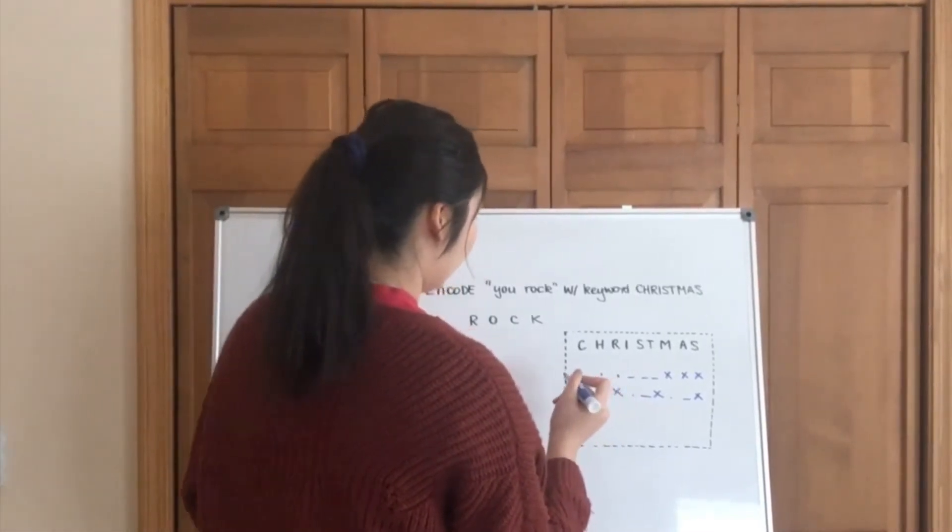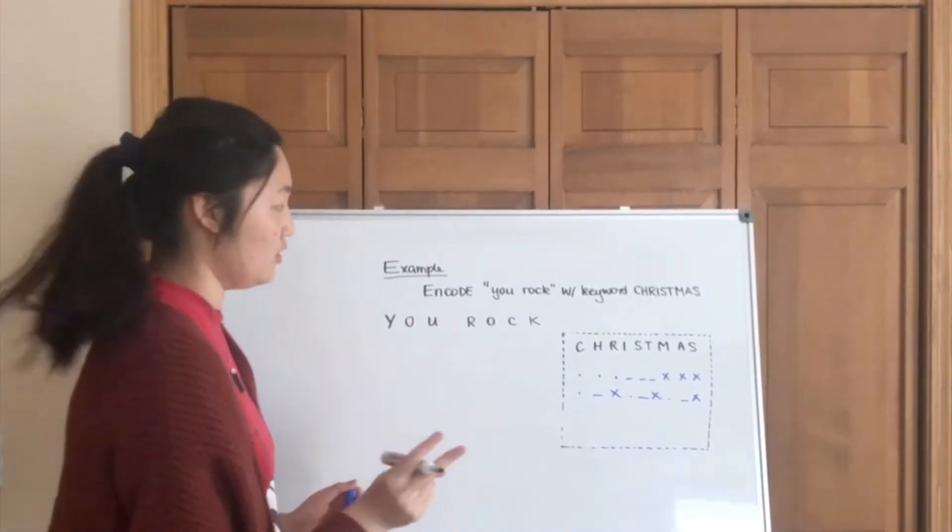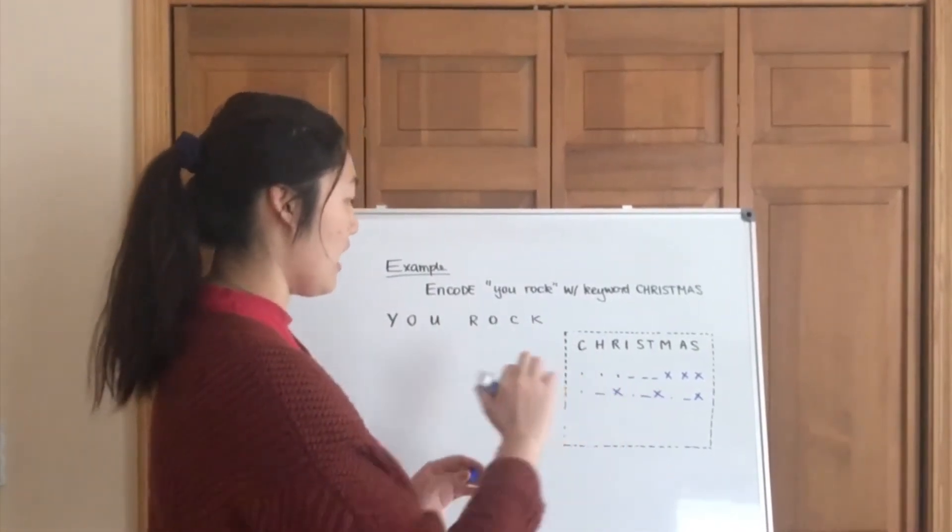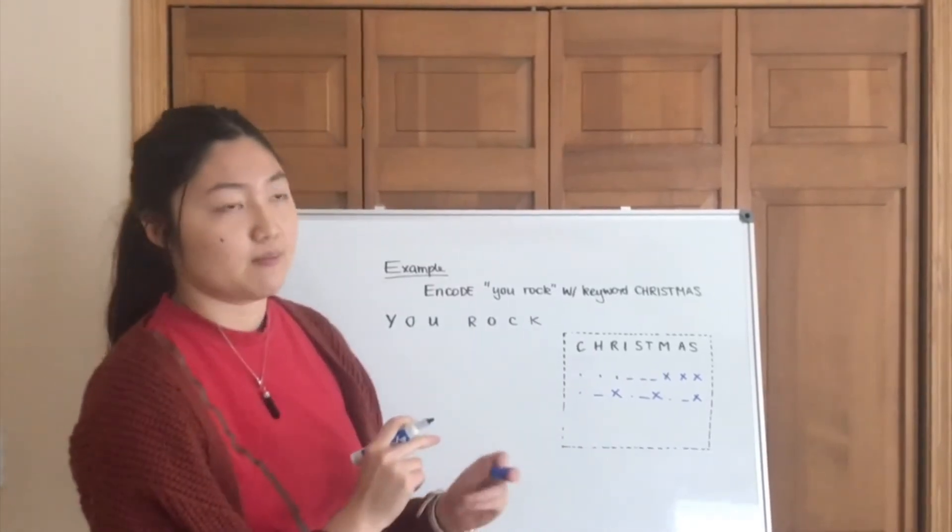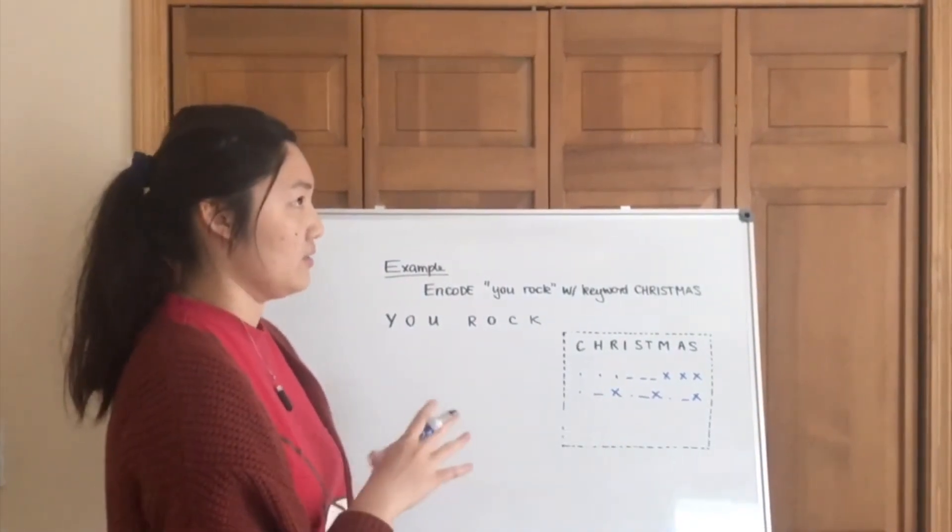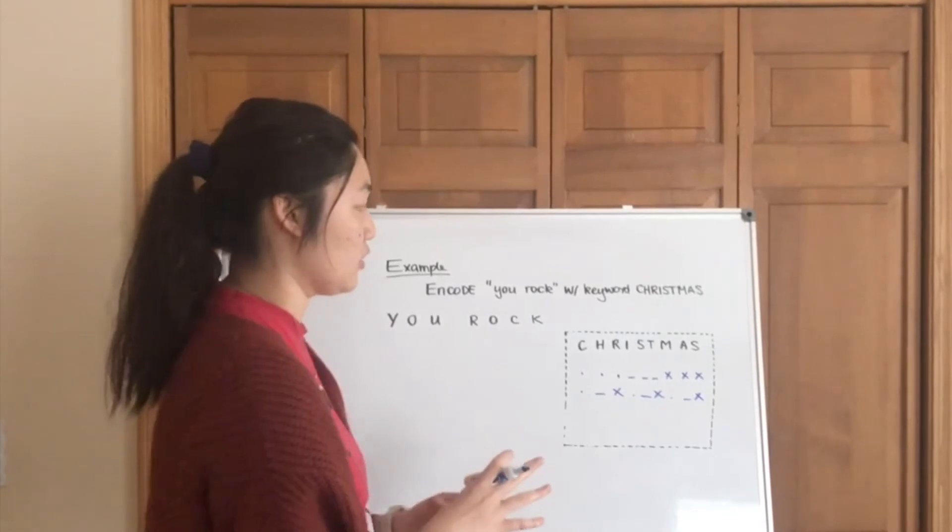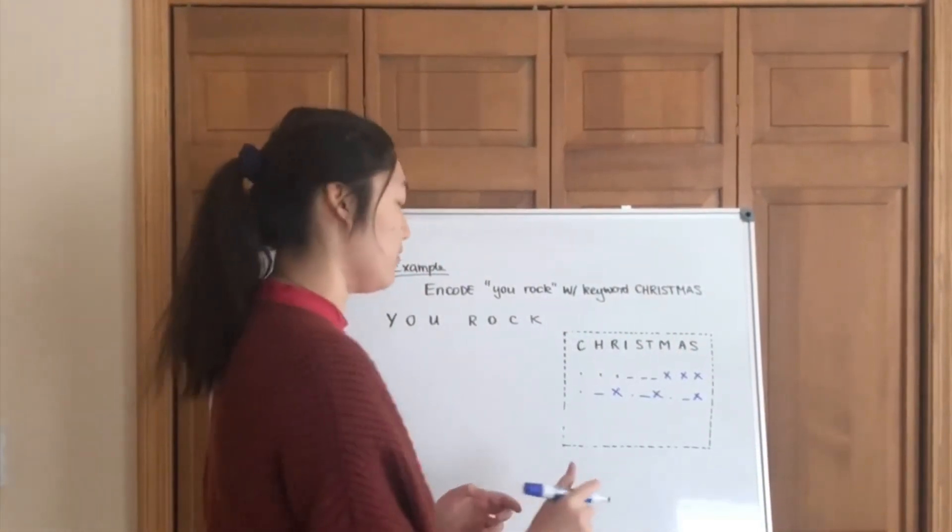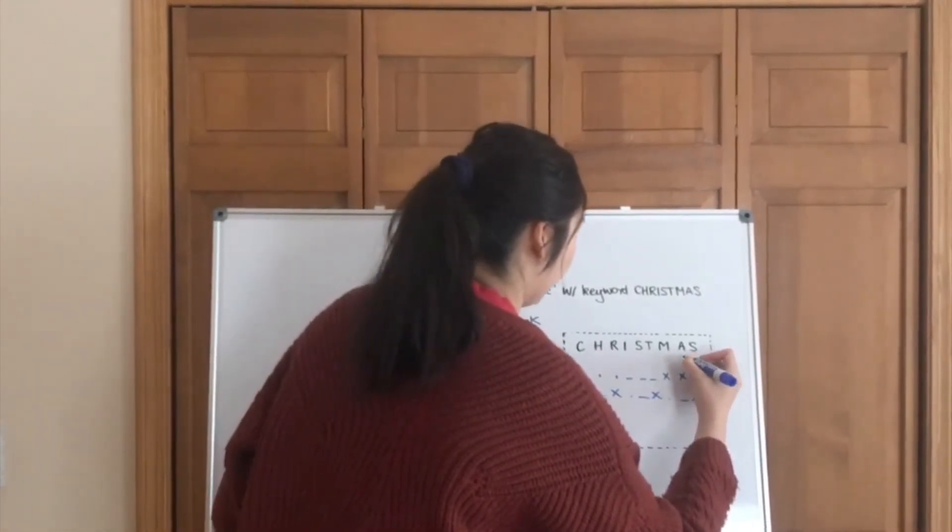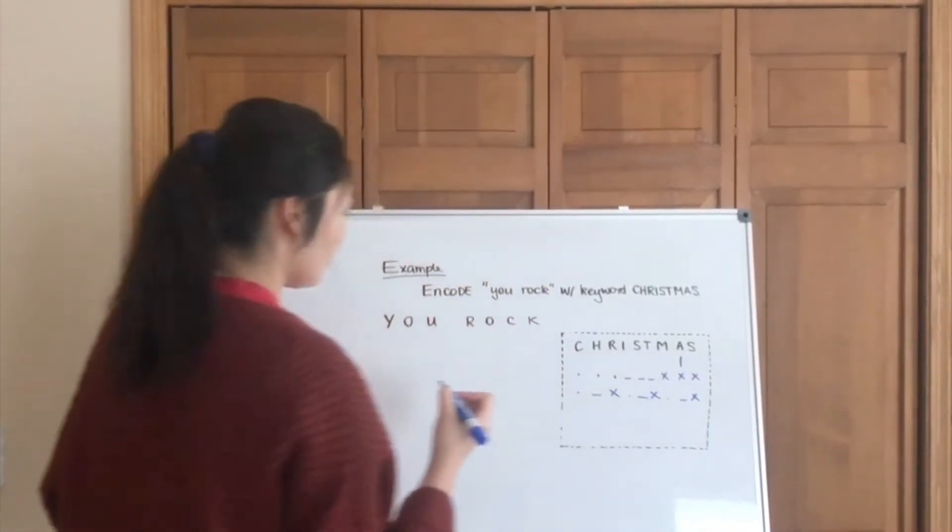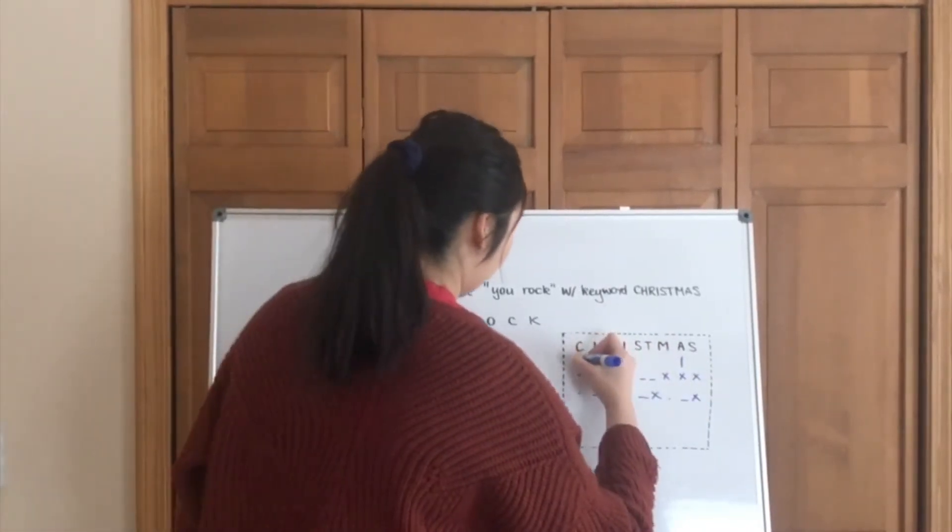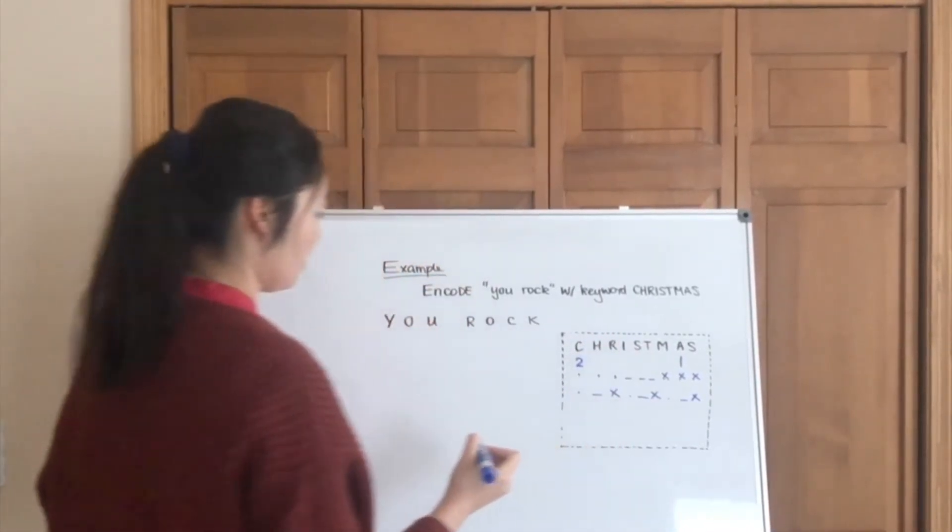The second step we're going to do is we are going to rank each individual letter in the word CHRISTMAS by their sequence in the actual alphabet. So for example, since A is the starter of the alphabet, we are going to name it 1. What comes after that in this letter will be C. C is the second earliest, so we put a 2.